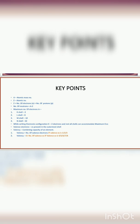Valence electrons are the number of electrons present in the outermost shell. Valency is the combining capacity of any element. If the valence electron count is 1, 2, or 3, valency equals that number. If the valence electron count is 4, 5, 6, 7, or 8, then valency equals 8 minus the number of valence electrons.